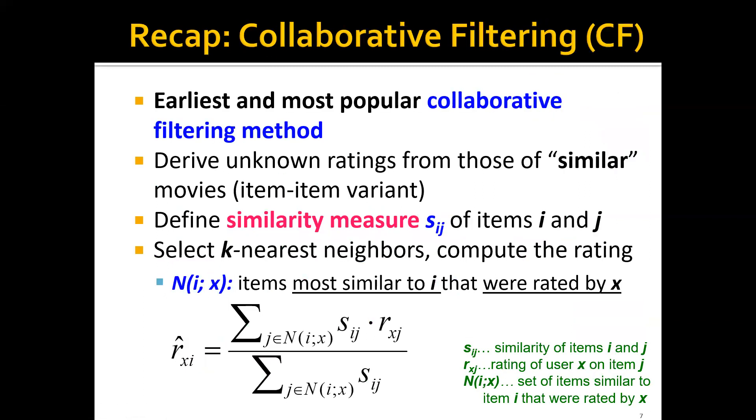As a recap, remember that in the collaborative filtering approach, we actually first derive the unknown ratings from those of similar movies. So this is the item-item collaborative filtering approach. We will first define a similarity measure, S_ij, of items i and j.